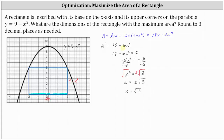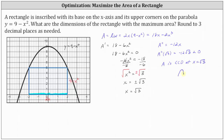If A prime equals 18 minus 6x squared, then A double prime equals the derivative of that with respect to x, which is negative 12x. Checking the sign of A double prime at square root of 3 gives us negative 12 times square root of 3, which is negative — less than zero. This indicates A is concave down at x equals square root of 3, and since the function is concave down at a critical number, we have a relative maximum there.